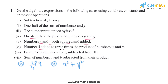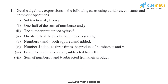In the sixth part, it is given: number five added to three times the product of numbers m and n. The product of m and n can be written as mn, three times means we multiply it by three, and we add five to that, giving us 3mn plus 5.